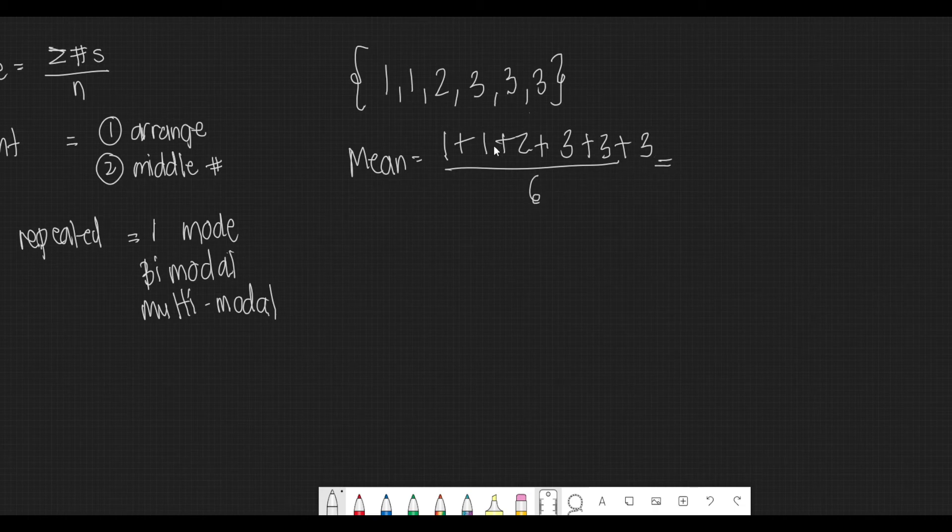1 plus 1 is 2, 2 plus 2 is 4, 4 plus 3 is 7, 7 plus 3 is 10, 10 plus 3 is 13. So 13 divided by 6, this would be our mean, or this is the average of our set.